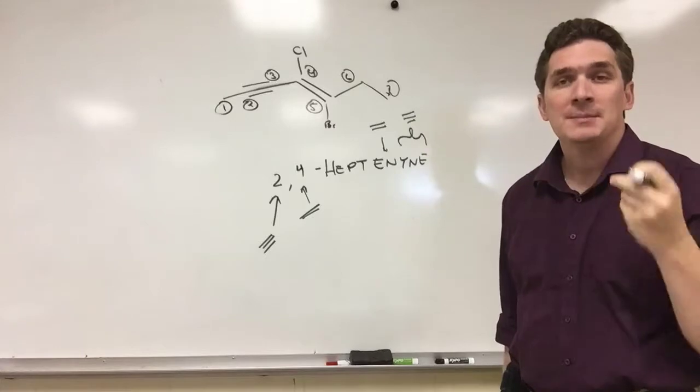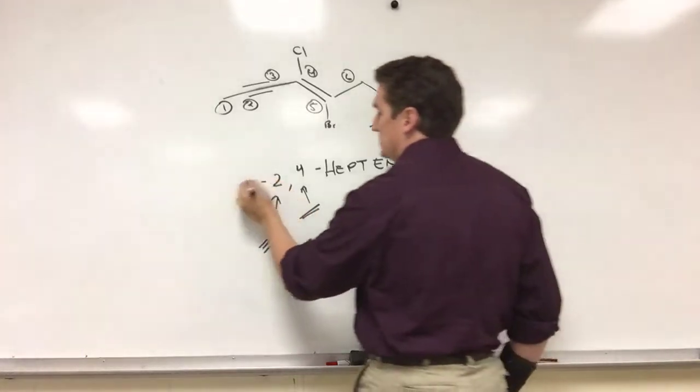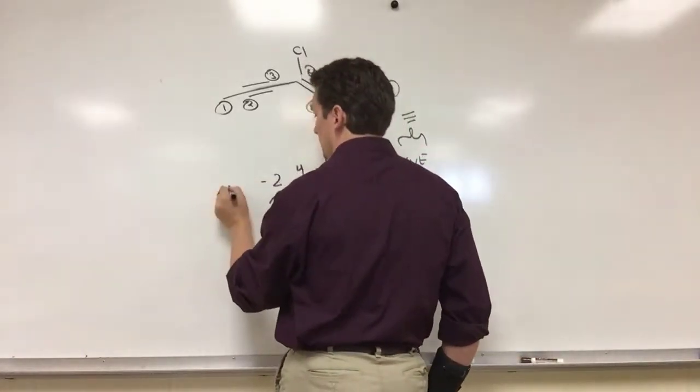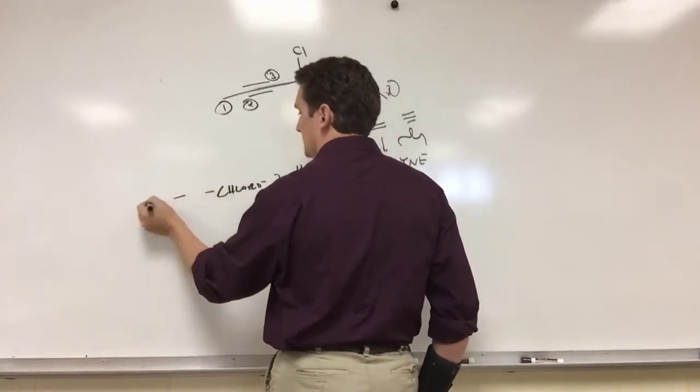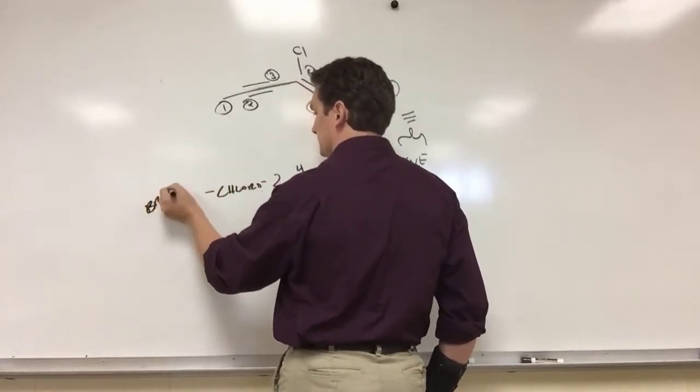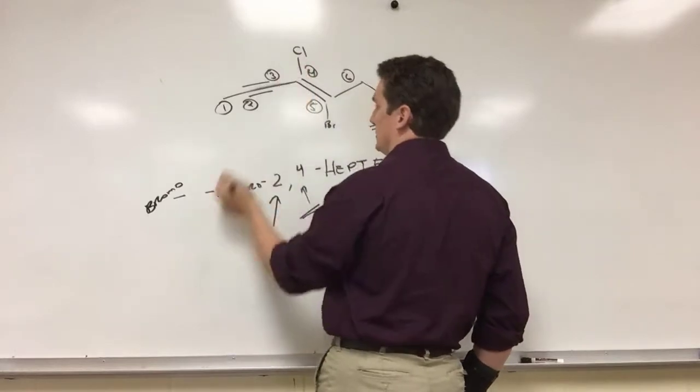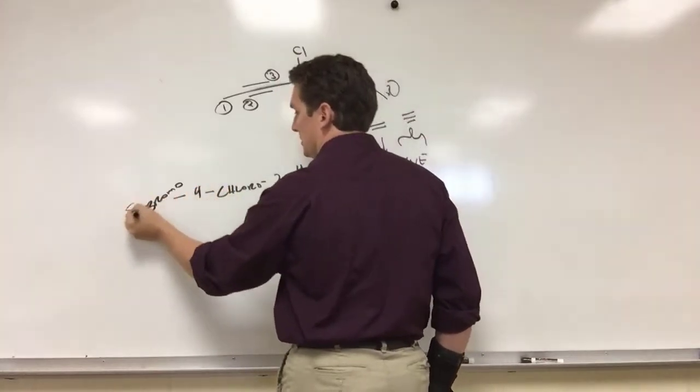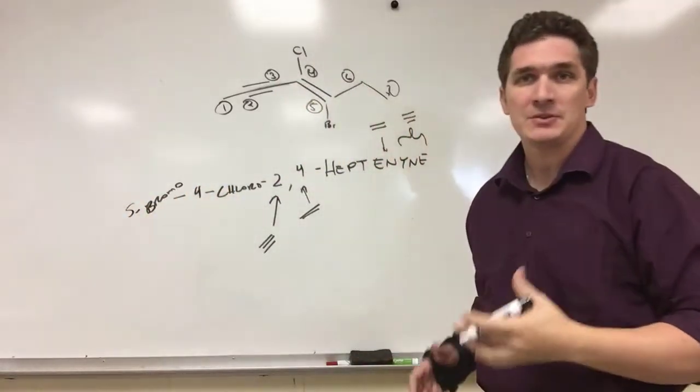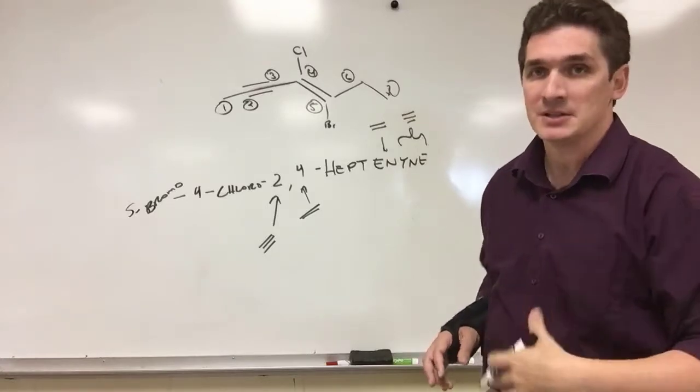We also need to name any branches or halogens. In this case, we have your chloro and your bromo. Chloro here is four, bromo here is five. We're not going to bother about trying to minimize the numbers because the triple bond is going to set the starting position.